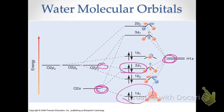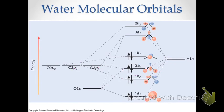The B2 orbitals get contributions from the 1s orbitals on hydrogen and the 2py orbital on oxygen. The B1 orbital gets a contribution from only the 2px orbital, as noted before. This is our non-bonding orbital, which would contain a lone pair of electrons in our simple description of the structure of water.